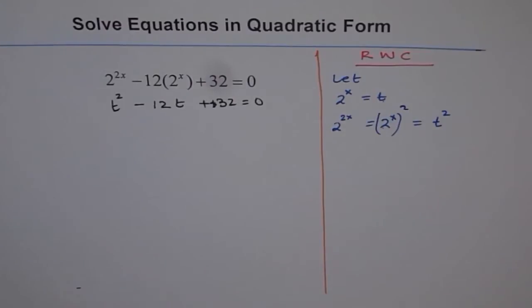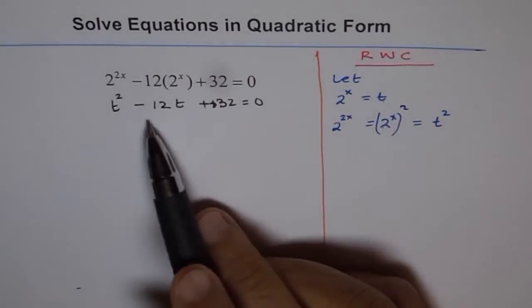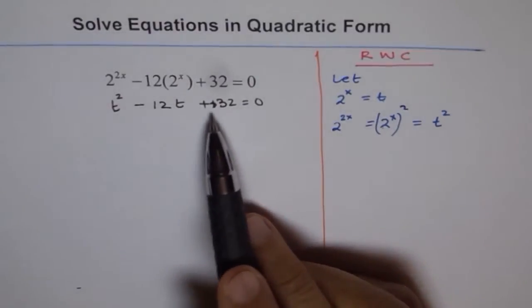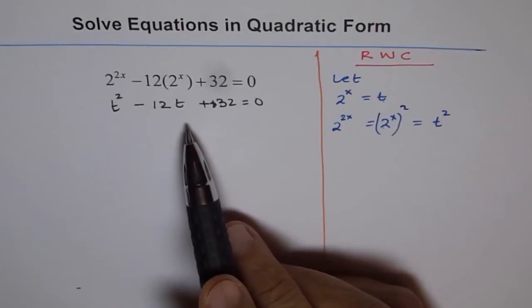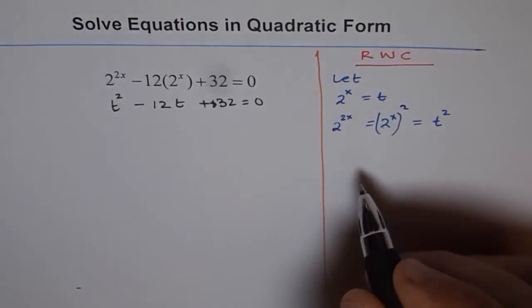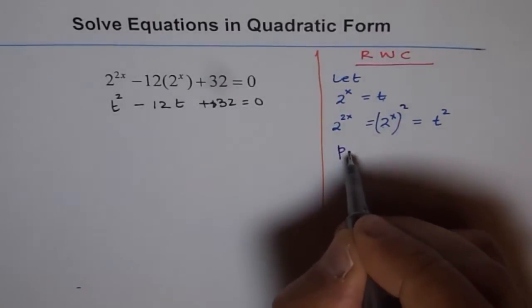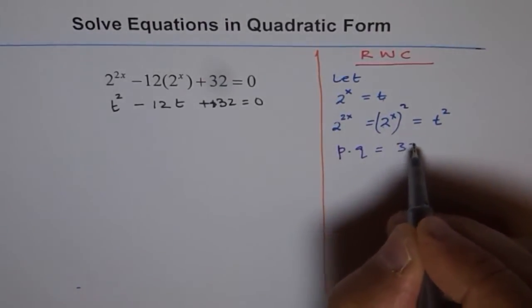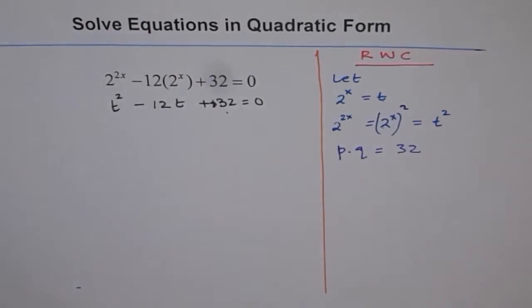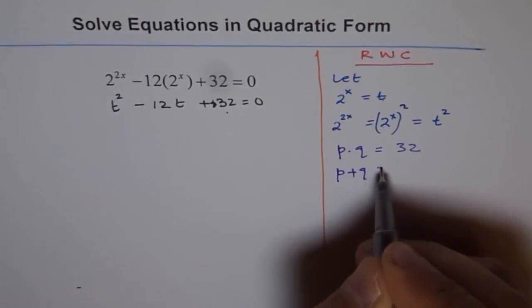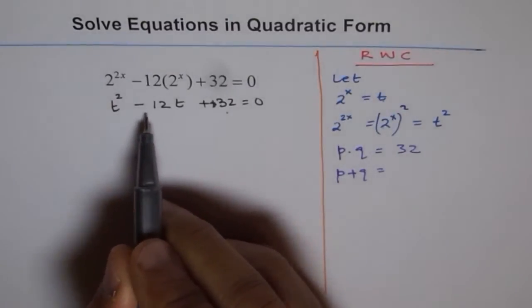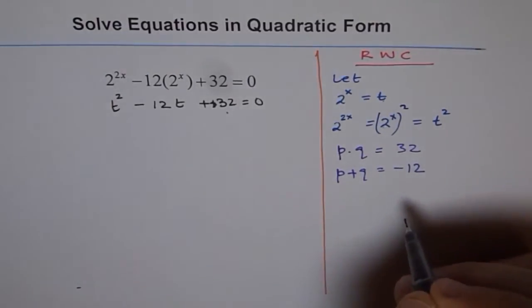This quadratic equation is a trinomial which we can factor easily and find the solution. Because something equals 0, if we have a product of two numbers here, any one of them will make the solution for us. So how to solve such an equation? Well, to solve this, what we really need to do is find two numbers. Let's say the two numbers p and q, whose product should be 32, the constant term here, and whose sum should be the coefficient of t, which is minus 12.